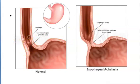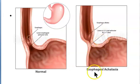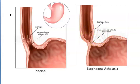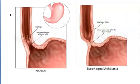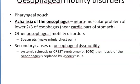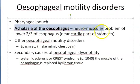Here they have shown the normal, where you can see that the sphincter is not so tight. And here you can see that the sphincter is so tight — this is esophageal achalasia. You can see the esophagus is also dilated here compared to the normal esophagus. So this comes under esophageal motility disorders, one of the conditions.